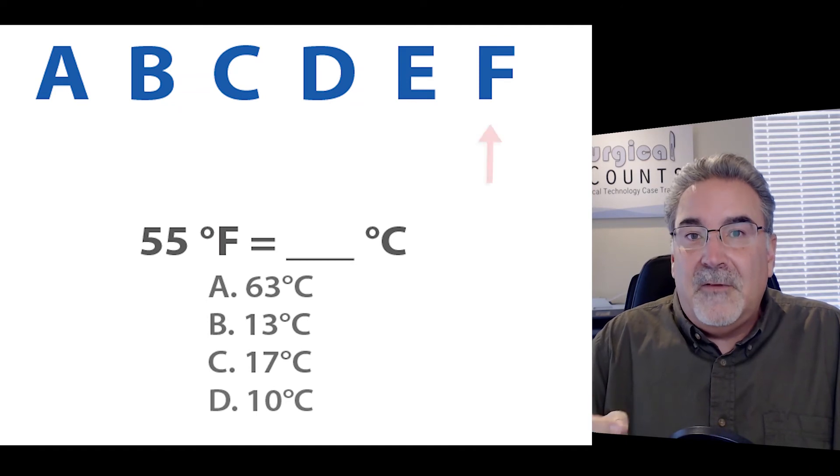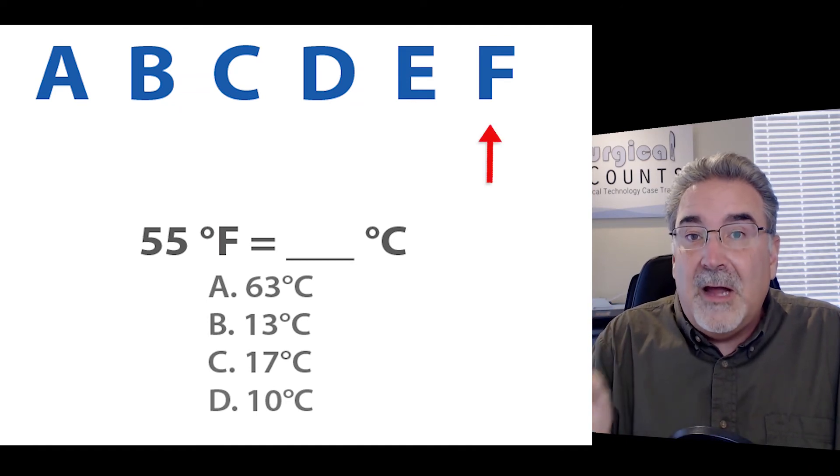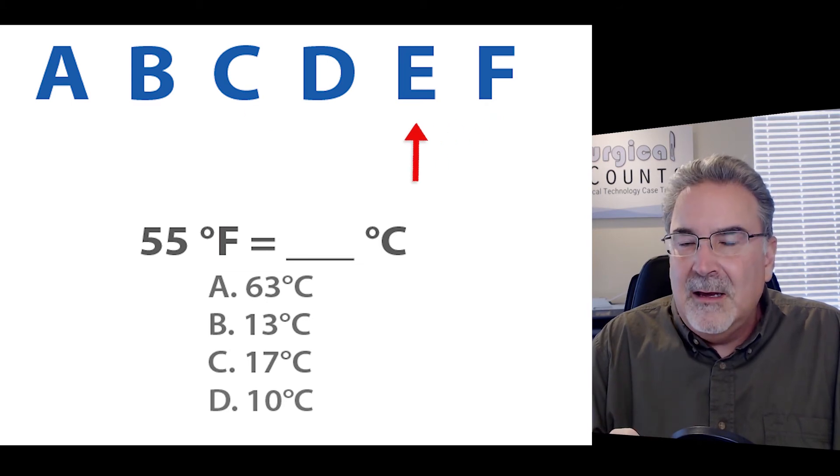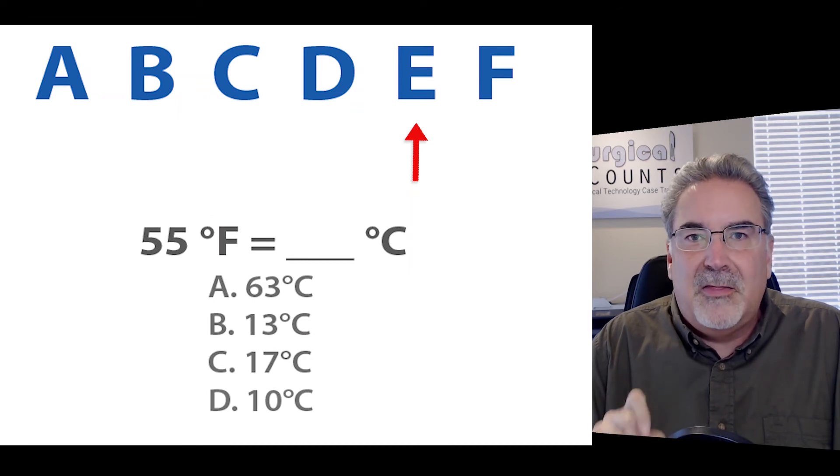Well, 55 is our Fahrenheit. That's our F. So we're going down the scale. The next thing we come to is an E. That reminds us of 3, which is 30. We're going down the scale. So we're going to subtract that 30. 55, 45, 35, 25.